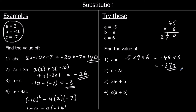Question 2: c minus 2a. c is 6, and we're taking away 2 times a. So 2 times negative 5 — 2 times negative 5 is positive 10. So it's going to be the same as 6 plus 10, which is 16.